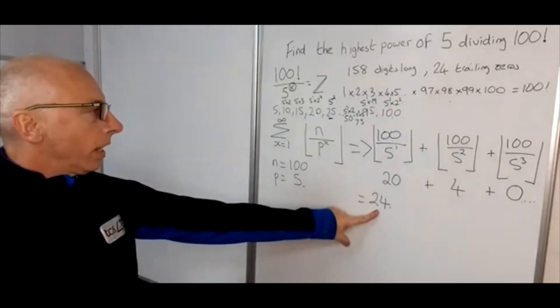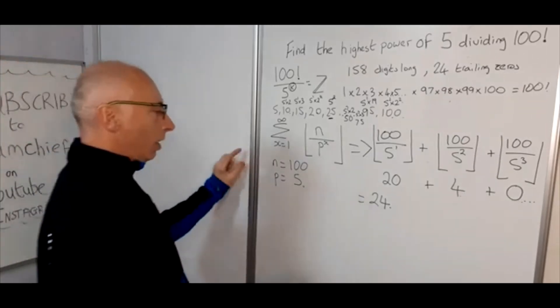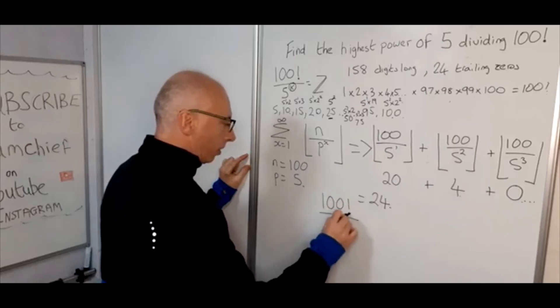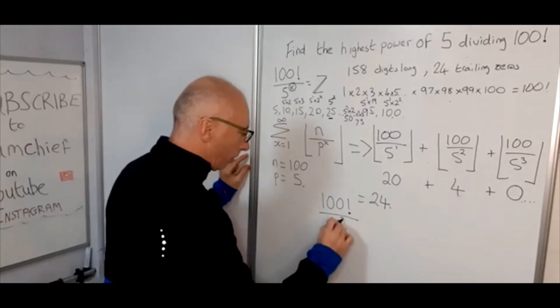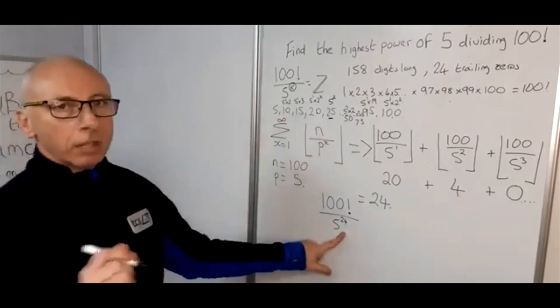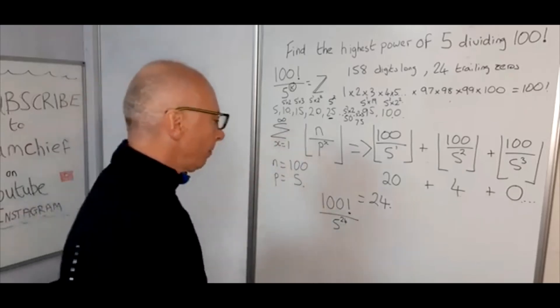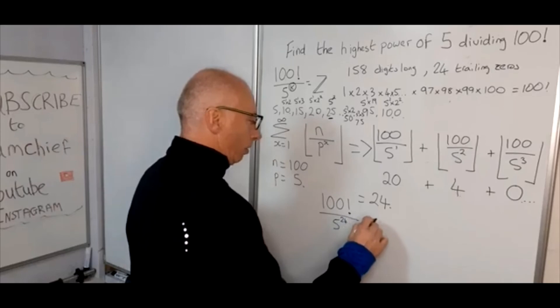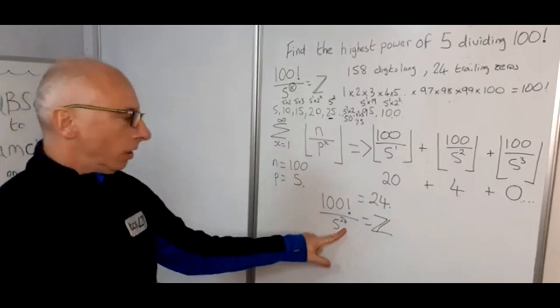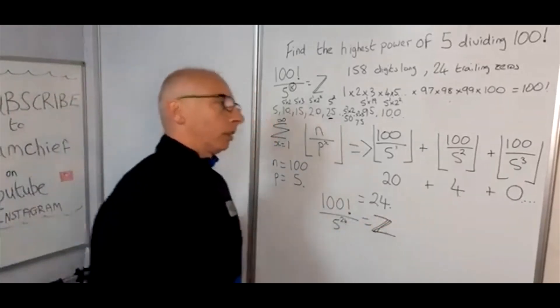So therefore here we can say that our value for k is 24. So basically 100 factorial divided by 5 to the power of 24, which is also a very very big number. Put in the comments down below if you can tell me how many digits that is and how many trailing zeroes it's going to be. This will yield an integer. Any number bigger than that will not yield an integer for us.